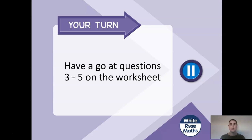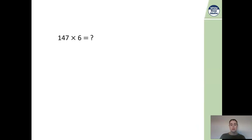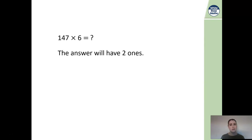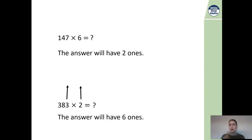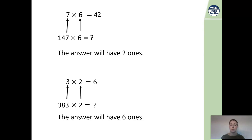Pause the video and have a go at doing questions three to five on the worksheet. It's always really important to check our work before moving on. For example, 147 multiplied by six — I'd have to work that out using my written method, but I already know the answer will have two ones, because seven times six is 42 and the ones value of 42 is two. Likewise, for 383 multiplied by two, I know the answer is going to have six ones, because three ones multiplied by two gives six.